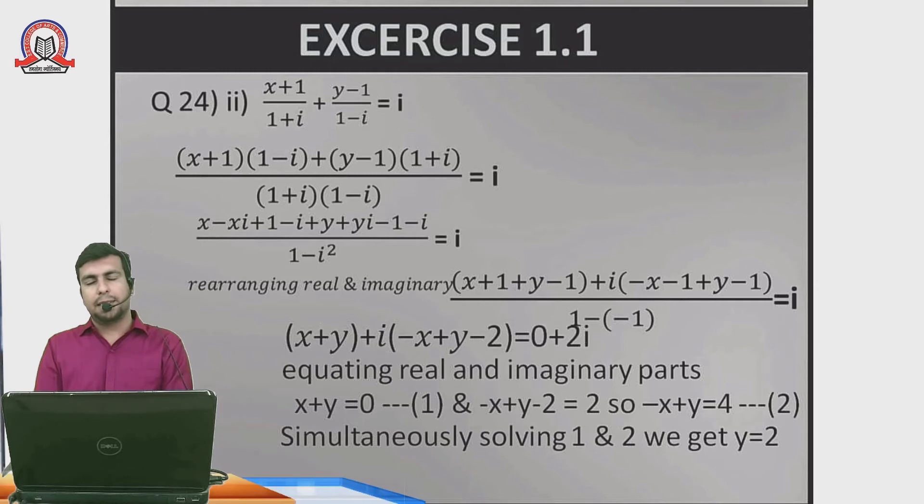Adding equations 1 and 2: x and minus x cancel, leaving 2y equals 4, so y equals 2. Substituting in equation 1: x plus 2 equals 0, so x equals minus 2.